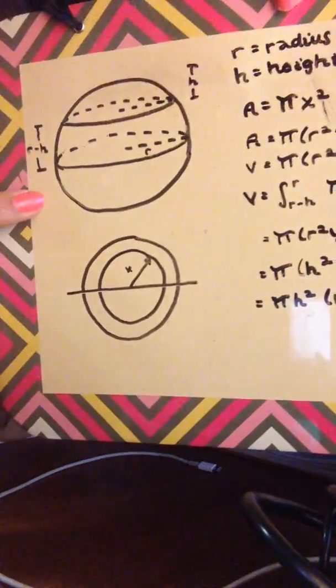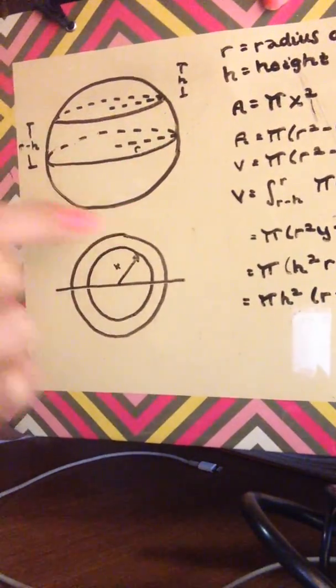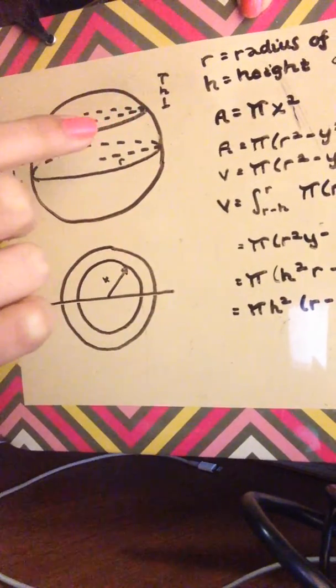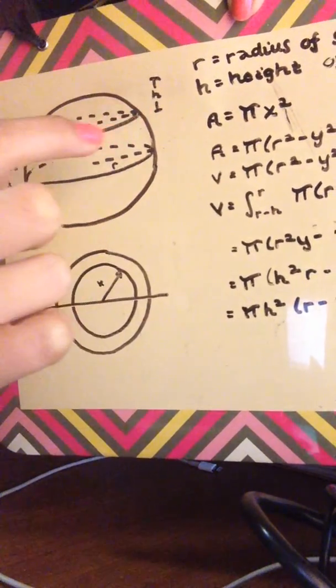First, this is what it's going to look like. So this is the sphere, and then you're going to try to find the volume of this cap right here.